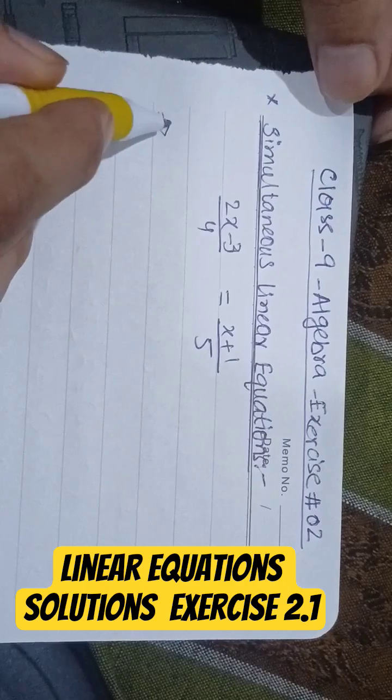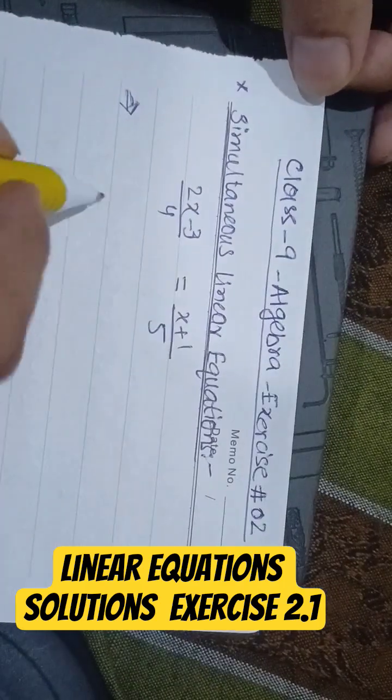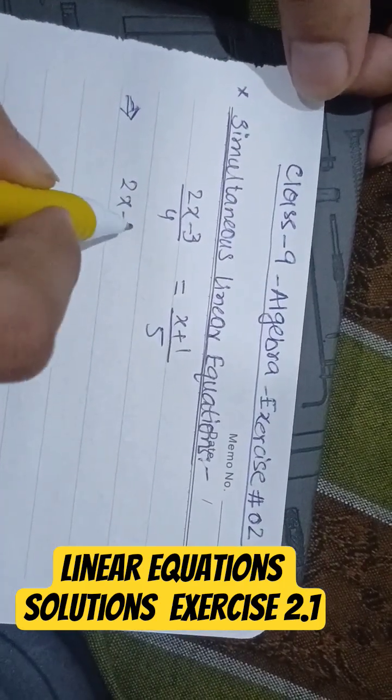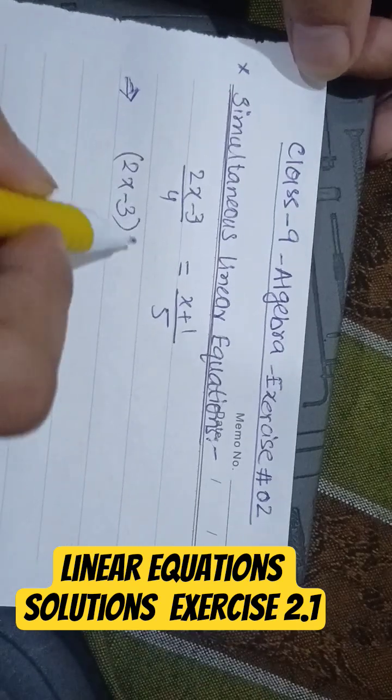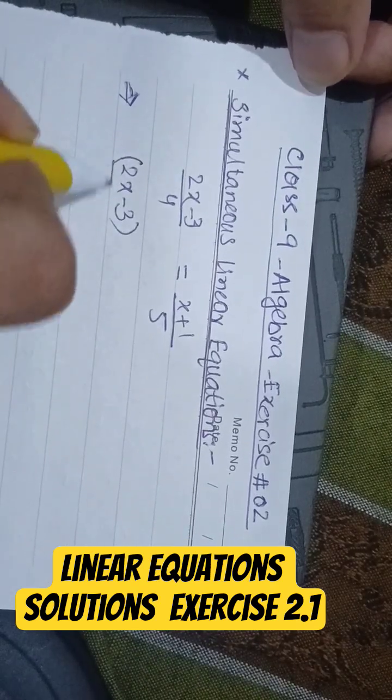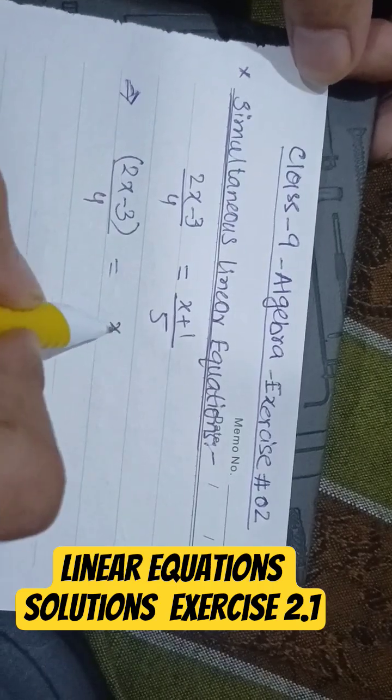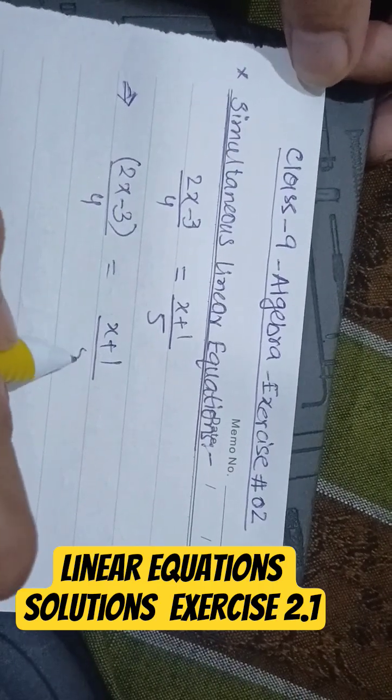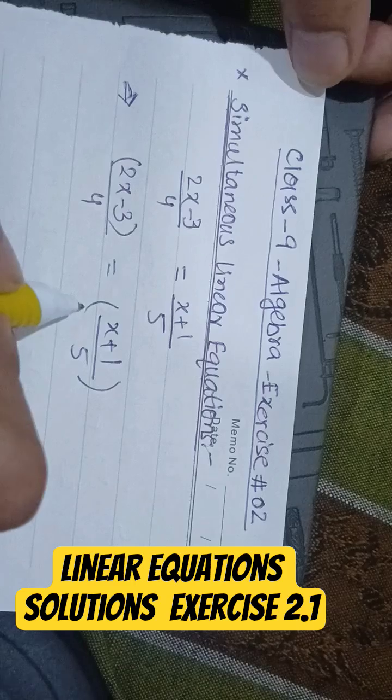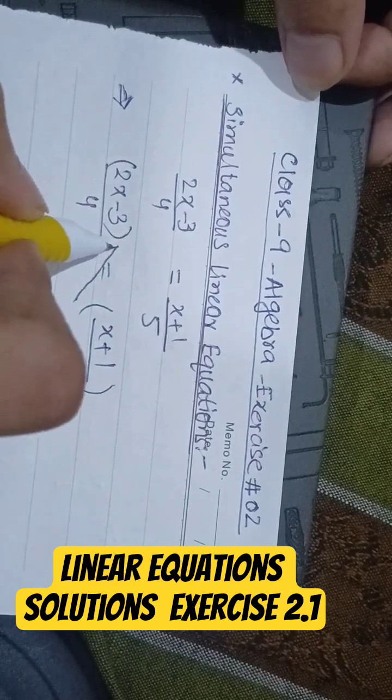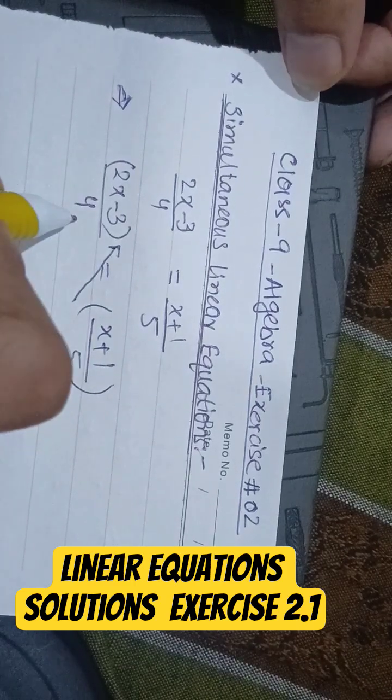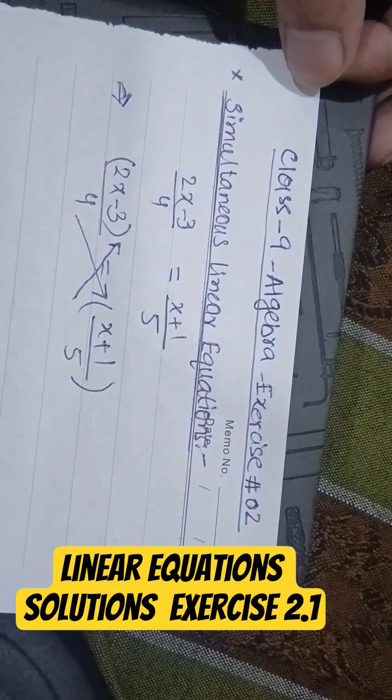2x minus 3 will be multiplied. First we will write the equation. This one will be multiplied by this equation side, and this denominator will be multiplied by the other side. This phenomena is called cross multiply.